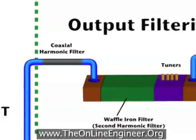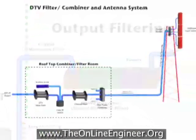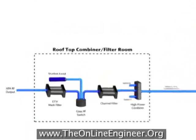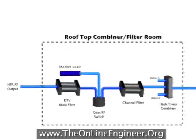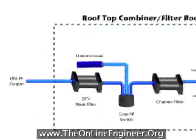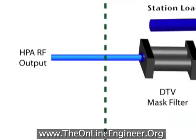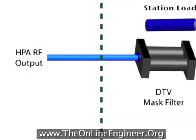Part 3 will begin at the output of the IOT and the initial filtering of the high power RF signal and the transmission line used to carry it.